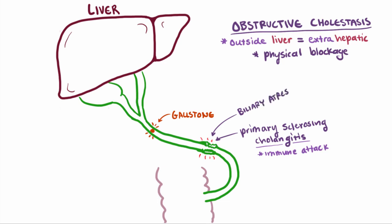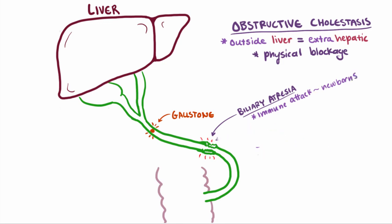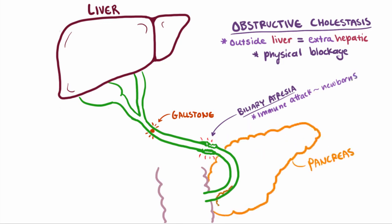Biliary atresia is another condition just like sclerosing cholangitis, but this one specifically affects newborns. Finally, pancreatic carcinomas that grow at the head of the pancreas may also physically block the flow of bile, since the common bile duct moves through the head of the pancreas.